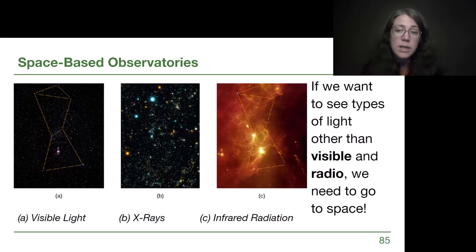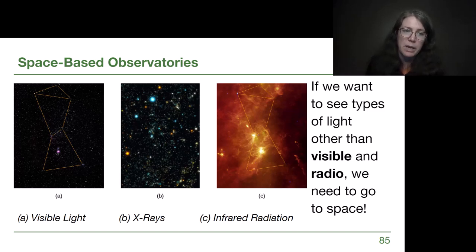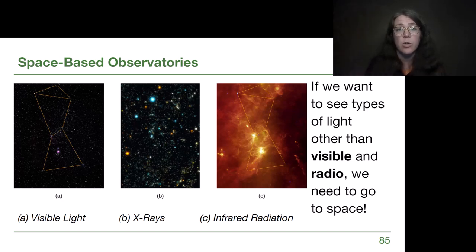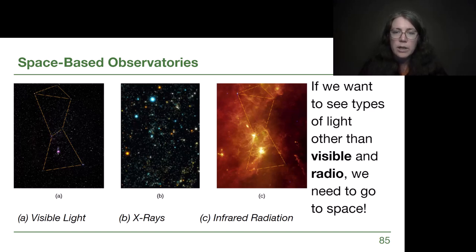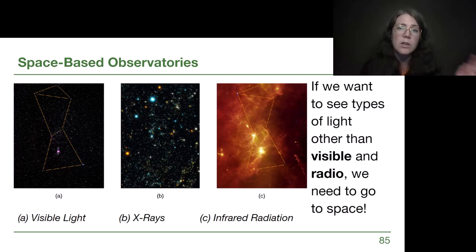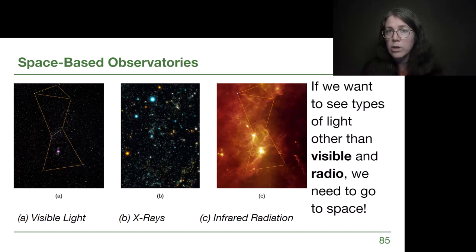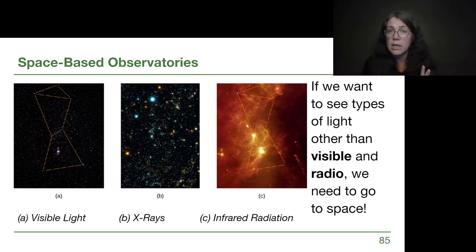If we want to see types of light other than visible light and radio, we really do need options in space. Three images of the Orion constellation region show that infrared radiation reveals a whole different picture — clouds of gas and dust, cooler sources compared to the visible light of just stars. As we learn more about objects throughout the semester, we should recognize that what we're learning requires telescopes to have collected and analyzed data using the spectroscopy understanding from chapter five.